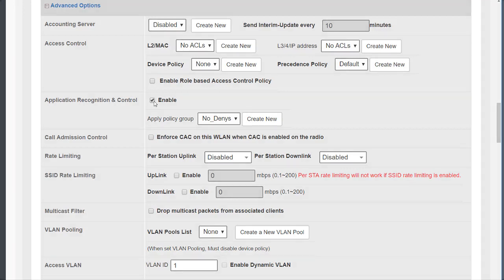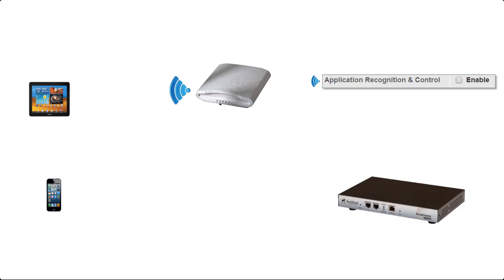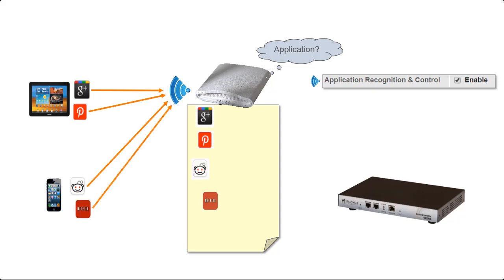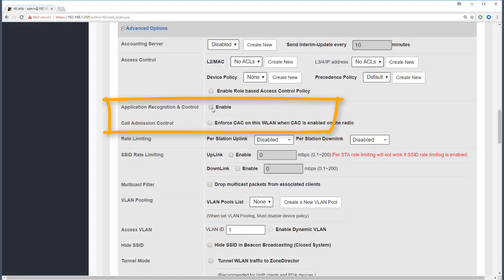Application recognition and control begins with the creation of a new WLAN on the Zone Director. By default it is not enabled, so the WLAN is pushed down to the access point and clients connect but no application recognition takes place. When we enable application recognition and control, the access point starts to look for applications in use. As clients use applications, those are recorded by the access point over time and that information is passed back to the Zone Director, visible in Monitor > Applications.